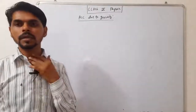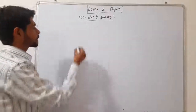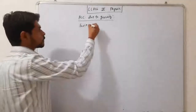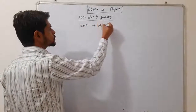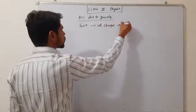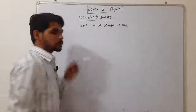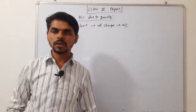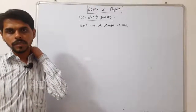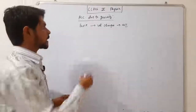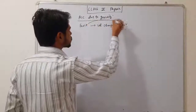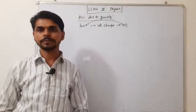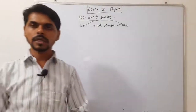सबसे पहले हम यह clear करते हैं कि किसी भी body में acceleration कैसे आती है। किसी भी body के अगर आप force लगाते हो, force लगाने से उस body की जो velocity है वो change होगी। Velocity change होने से उस body में acceleration आएगी। इसका मतलब, अगर आप किसी body में acceleration लाना चाहते हो, तो उसके पर force लगनी जरूरी है। बिना force के acceleration नहीं आ सकती।